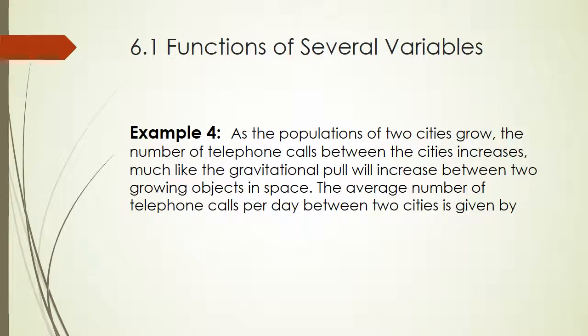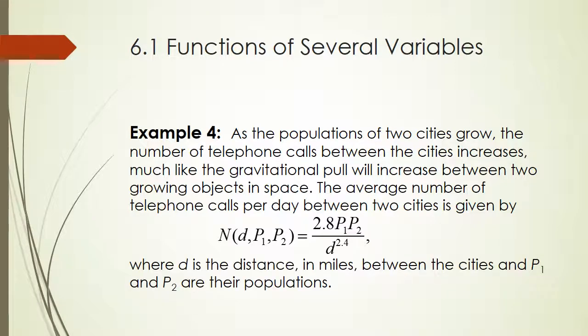Okay, now we have another application problem. As the populations of two cities grow, the number of telephone calls between the cities increases, much like the gravitational pull will increase between two growing objects in space. The average number of telephone calls per day between the cities is given by this formula, which looks very complicated, but again, they're going to give us the numbers for it. So D is the distance between the cities. P1 and P2 are the populations. You may want to jot this formula down. Pause if you need to to do that so that you can work out the problem.